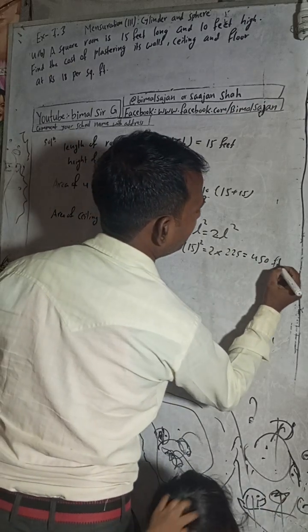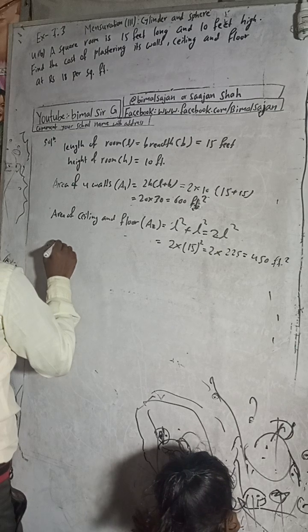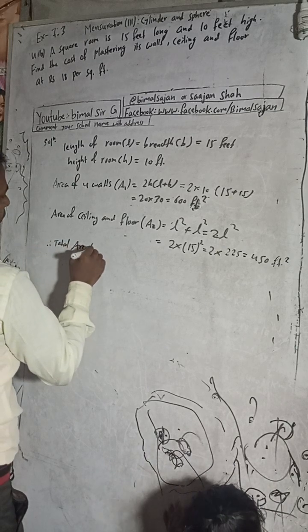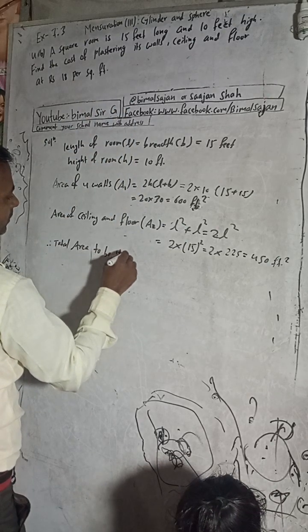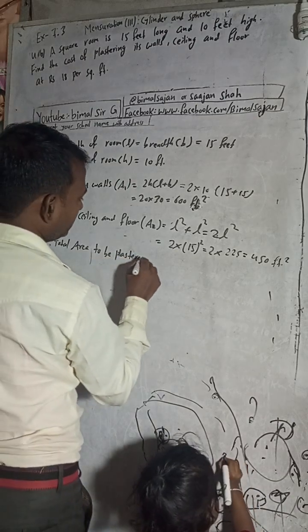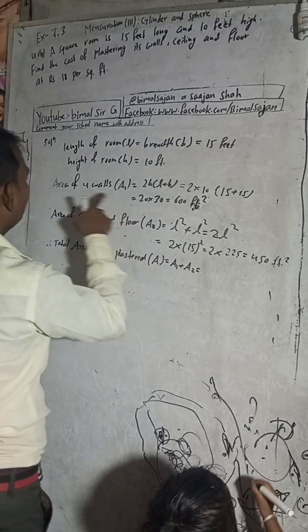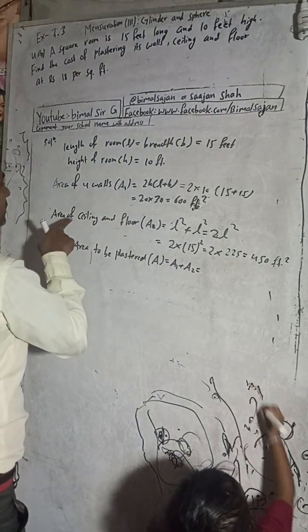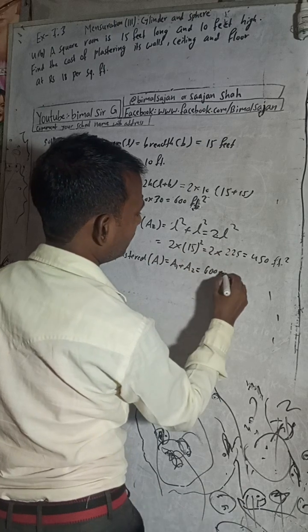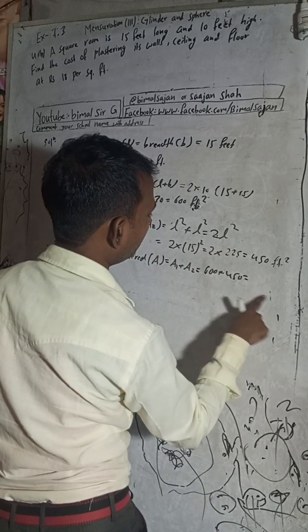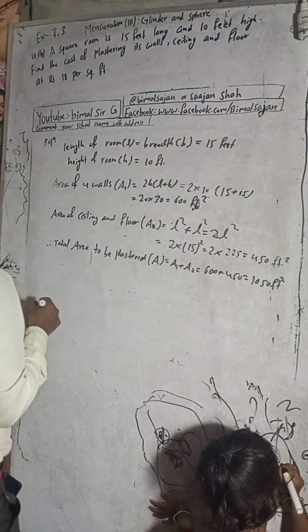Therefore, total area to be plastered is A1 plus area of ceiling and floor. So the total is 600 plus 450, which equals 1050 square feet.